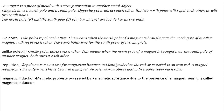A magnet is a piece of metal with strong attraction to another metal object. Magnets have a North Pole and a South Pole. If they ask you about North Pole or South Pole, you have to write this — it comes under keywords: North Pole, South Pole. Opposite poles attract each other, but two North poles will repel each other, as well as two South poles.